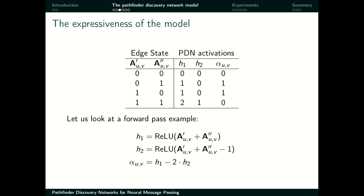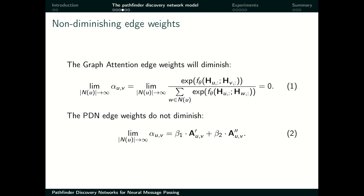Another interesting property of the model is that it doesn't suffer from the diminishing edge weights issue. For example, in a graph attention network, when you have a large number of neighbors and the number of neighbors tends to infinity, the individual edge weights go to zero, which is an issue characterizing a large number of graph convolutional neural networks. On the contrary, the edge weights of a properly defined PDN — a pathfinder discovery network — will never diminish and can even be constant if you have the appropriate parameterization, which is a nice property to have.